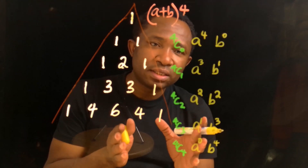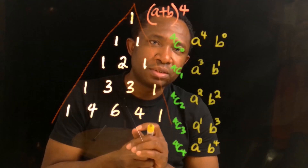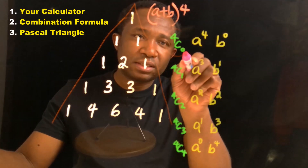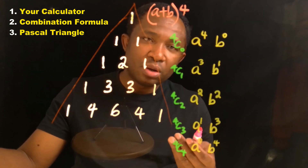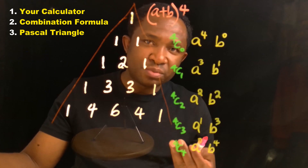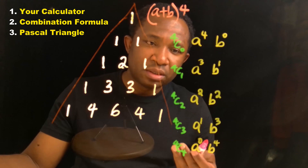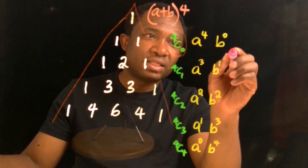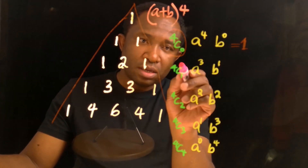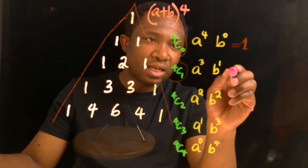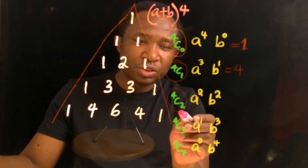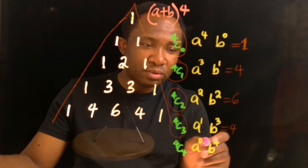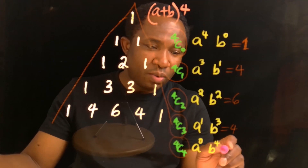If we solve this, we get the answer to the binomial expansion by summing up each of the terms. You can evaluate the combinations with your calculator, manually using factorials, or using the Pascal triangle. When the highest power is 4: 4 combination 0 equals 1, 4 combination 1 equals 4, 4 combination 2 equals 6, 4 combination 3 equals 4, and 4 combination 4 equals 1. So we have obtained the coefficients of each term.